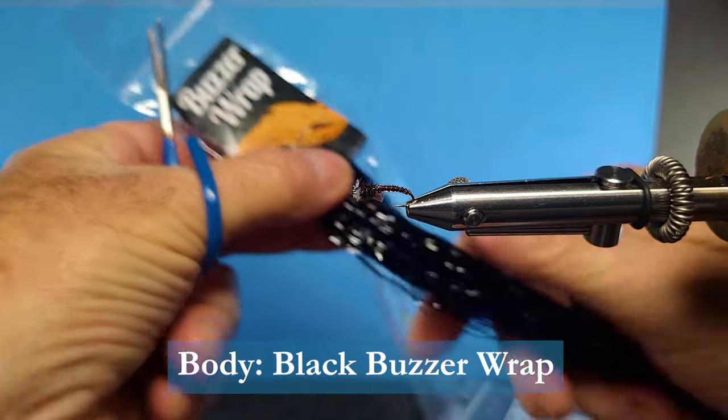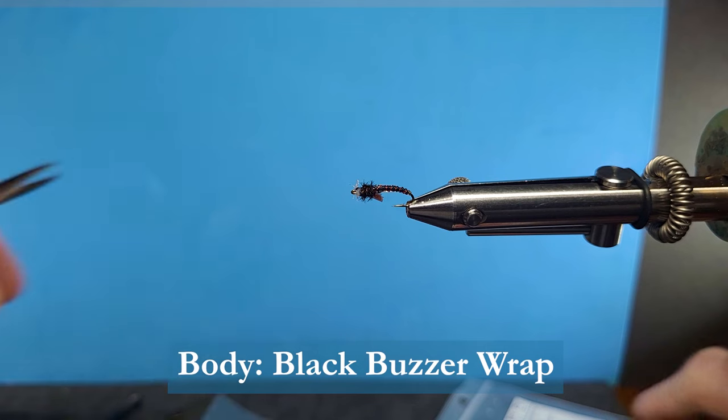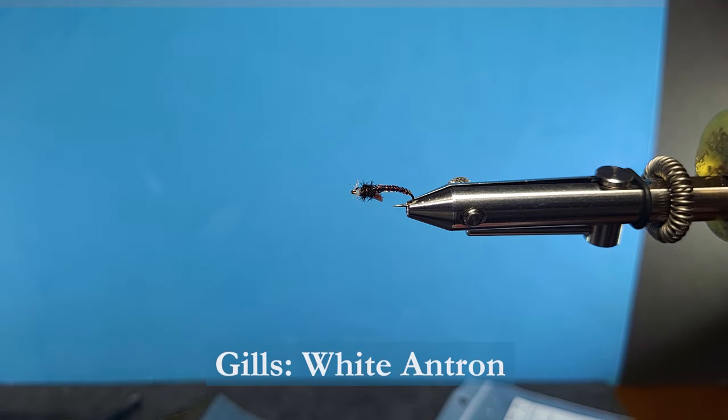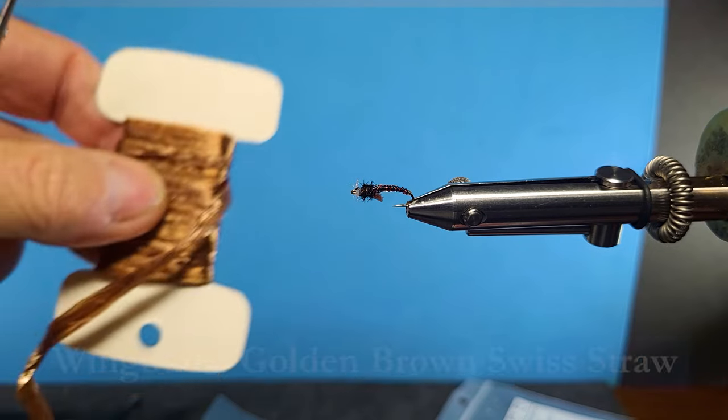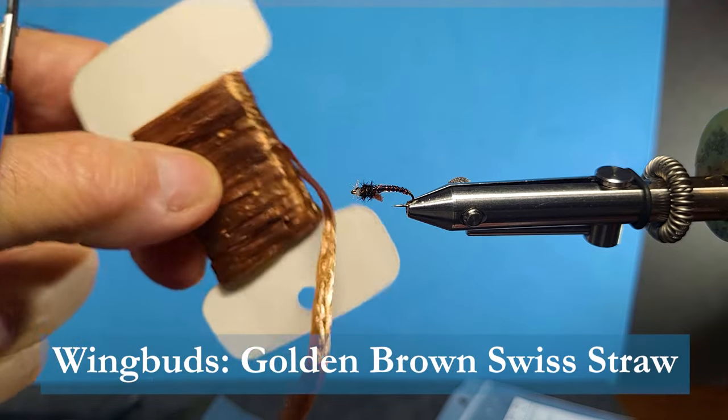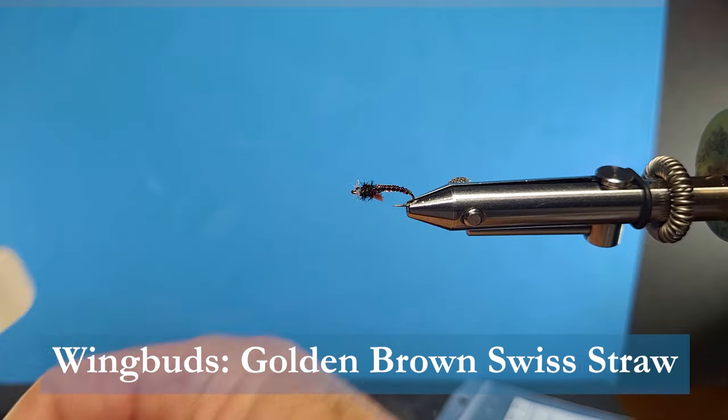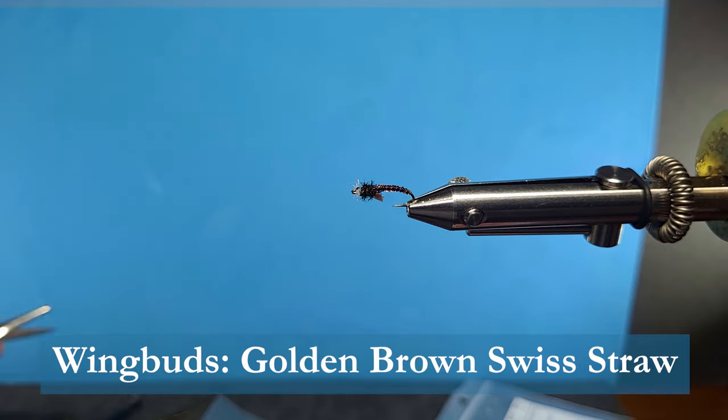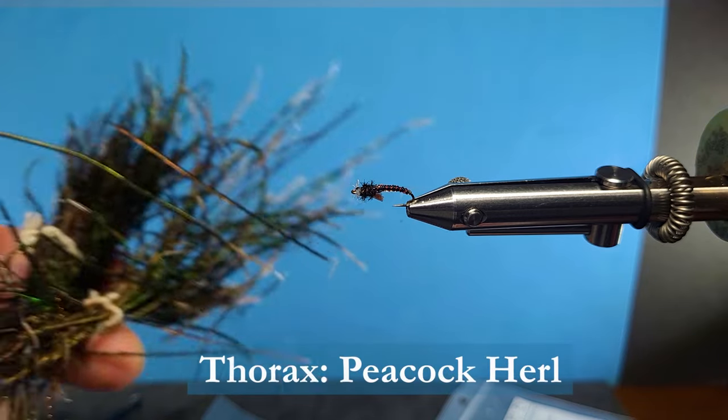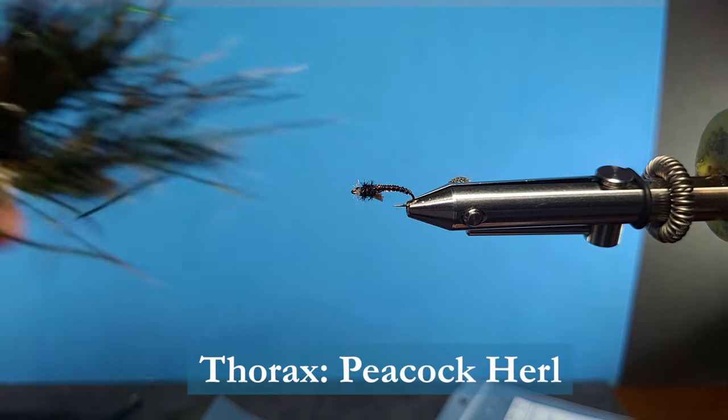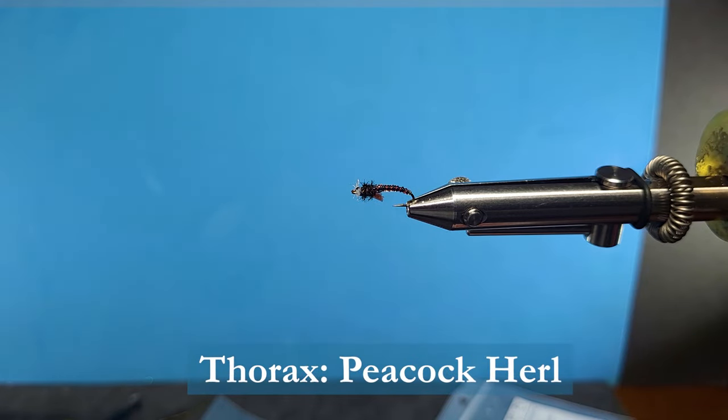Buzzer wrap. I'm going to be using some black buzzer wrap, nice shiny material that wraps down nice and tight. We're going to be using some mantron for the gills, using some kind of a golden brown material here, the Swiss straw for the wing buds, and just a little short piece of peacock for the thorax.